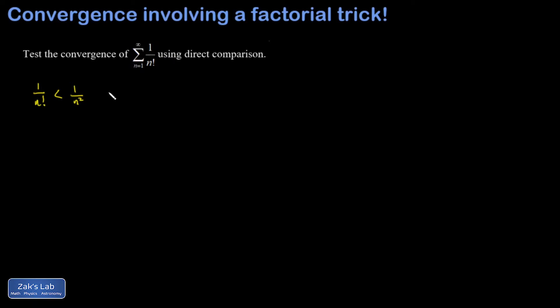Okay, so this inequality is equivalent. If I multiply both sides by n factorial, it's equivalent to saying that n factorial over n squared is greater than 1. So that's actually the expression that I'm going to investigate.